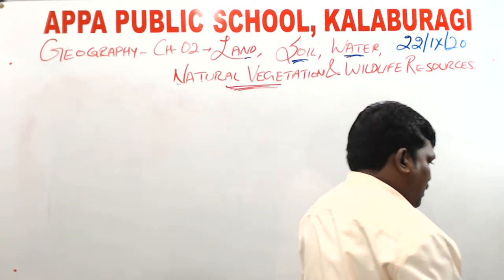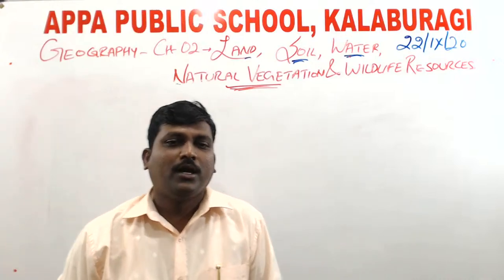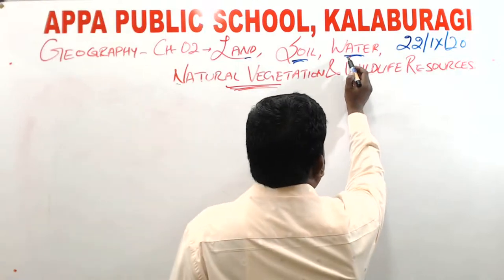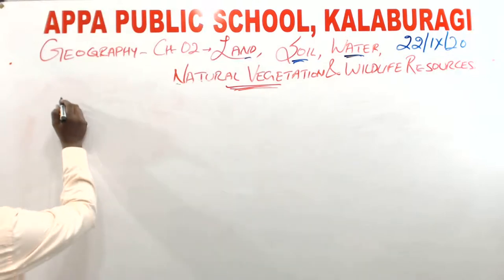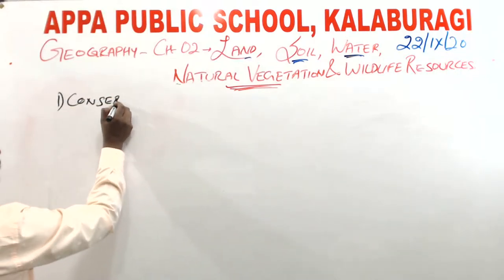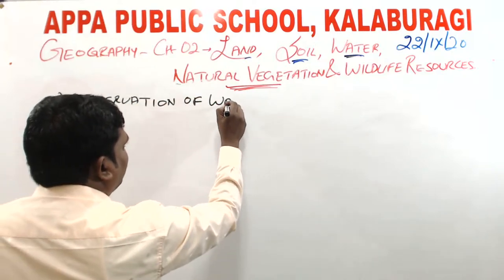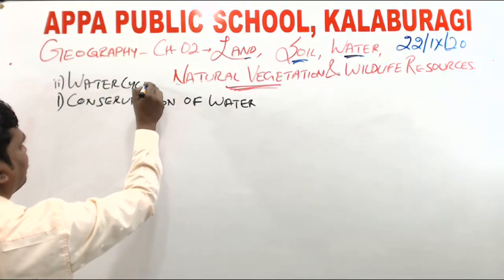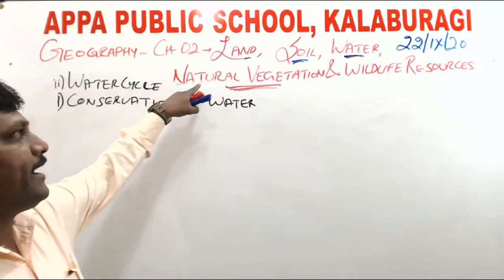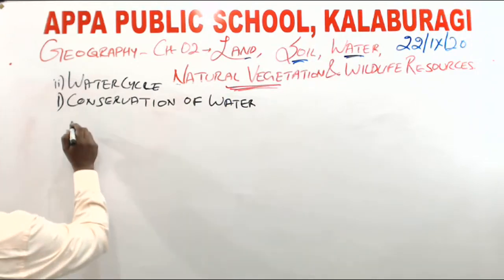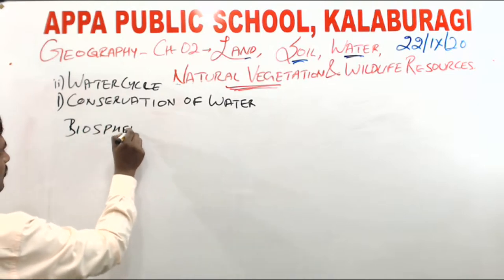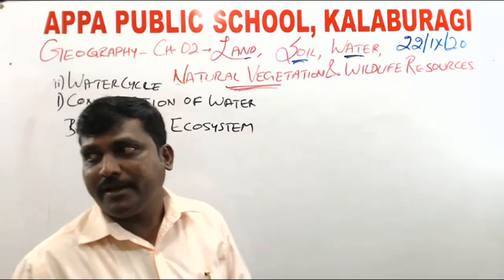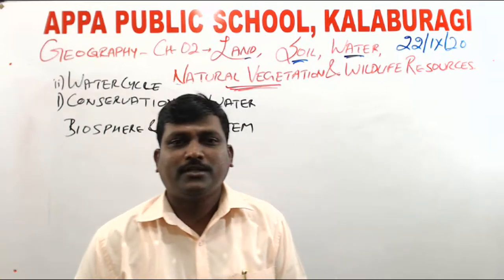So this was about natural vegetation, where we studied biosphere and ecosystem. Today in our class we studied the conservation of water, the water cycle with its five types, and then natural vegetation — an introduction to biosphere, ecosystem, and the food chain. Thus ends today's class.